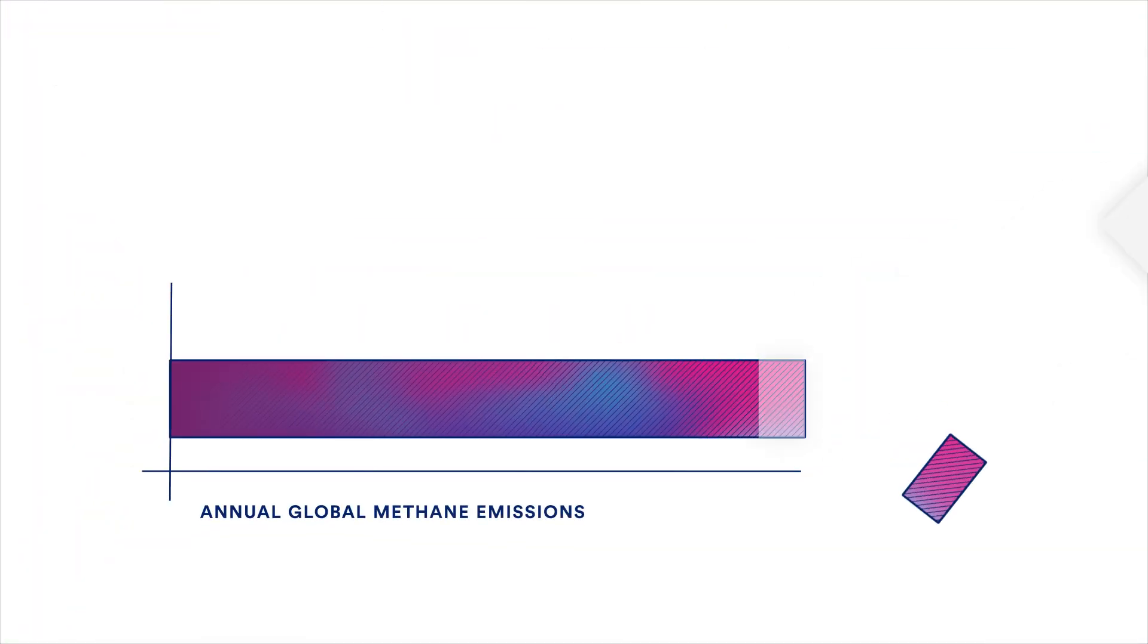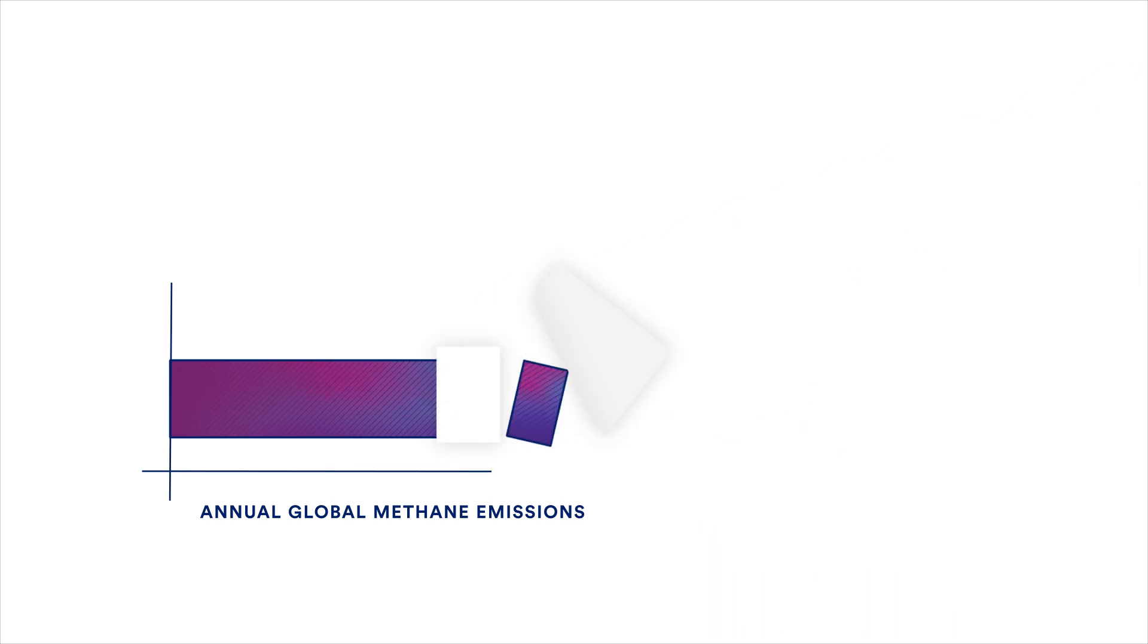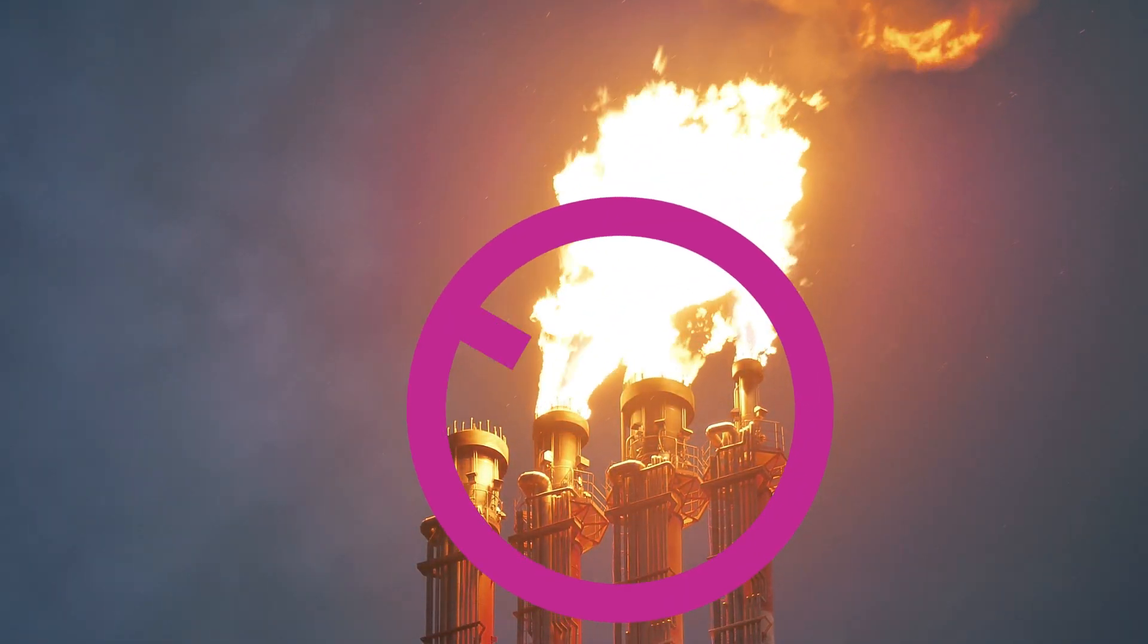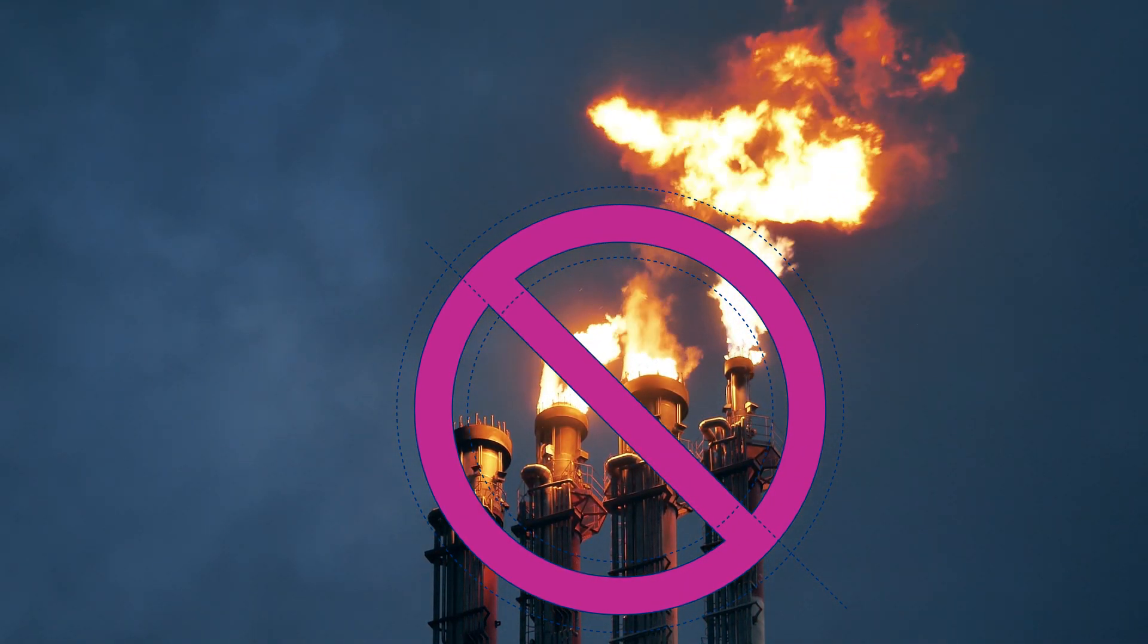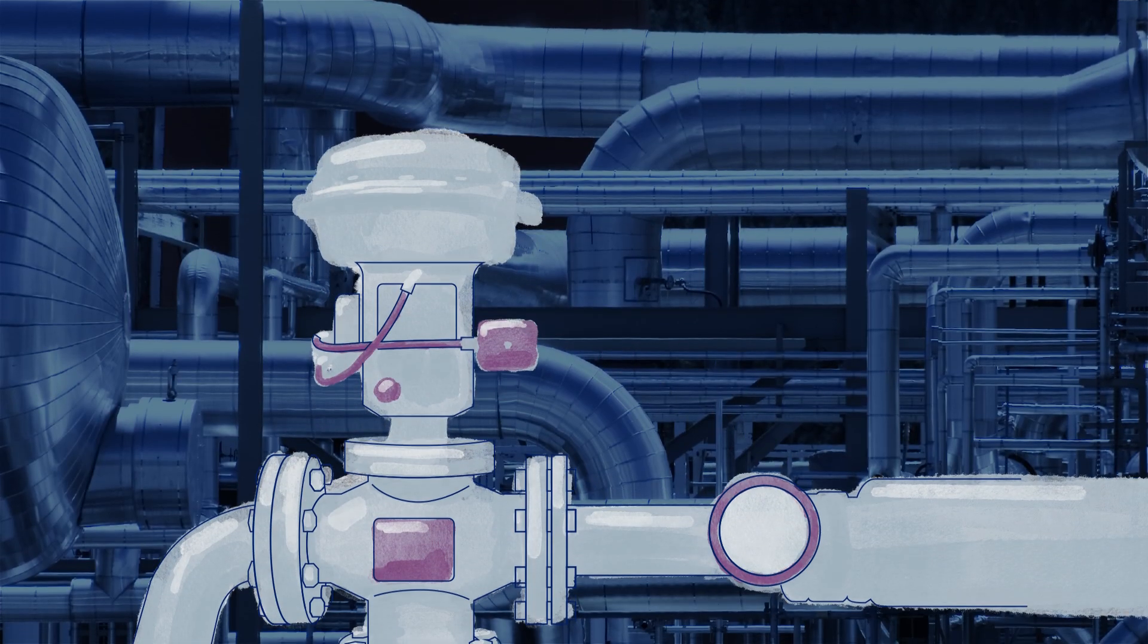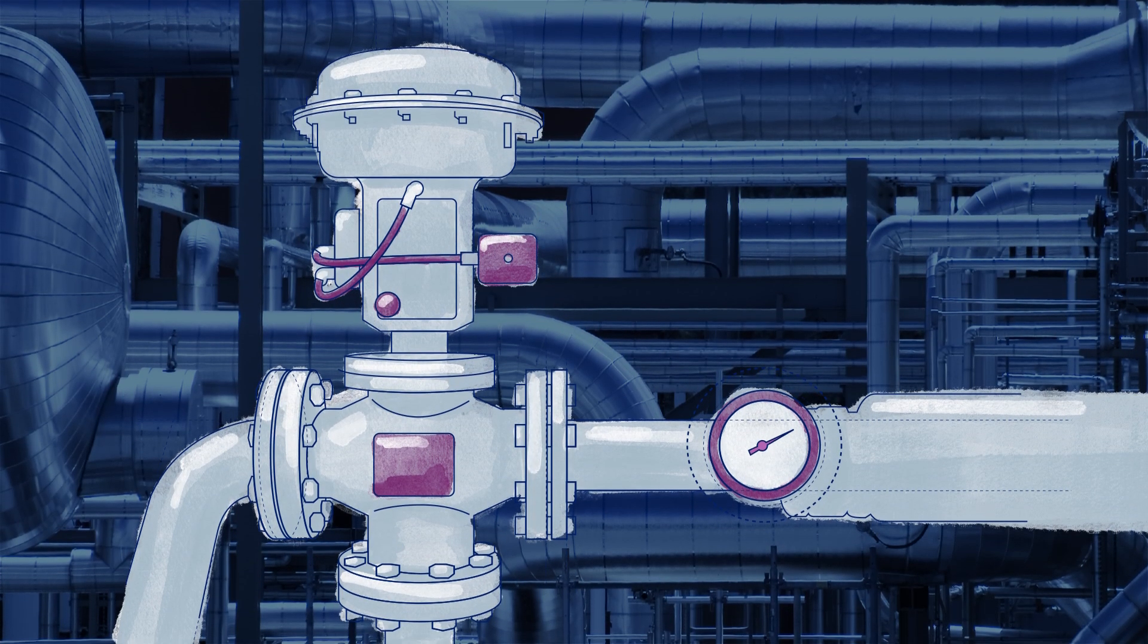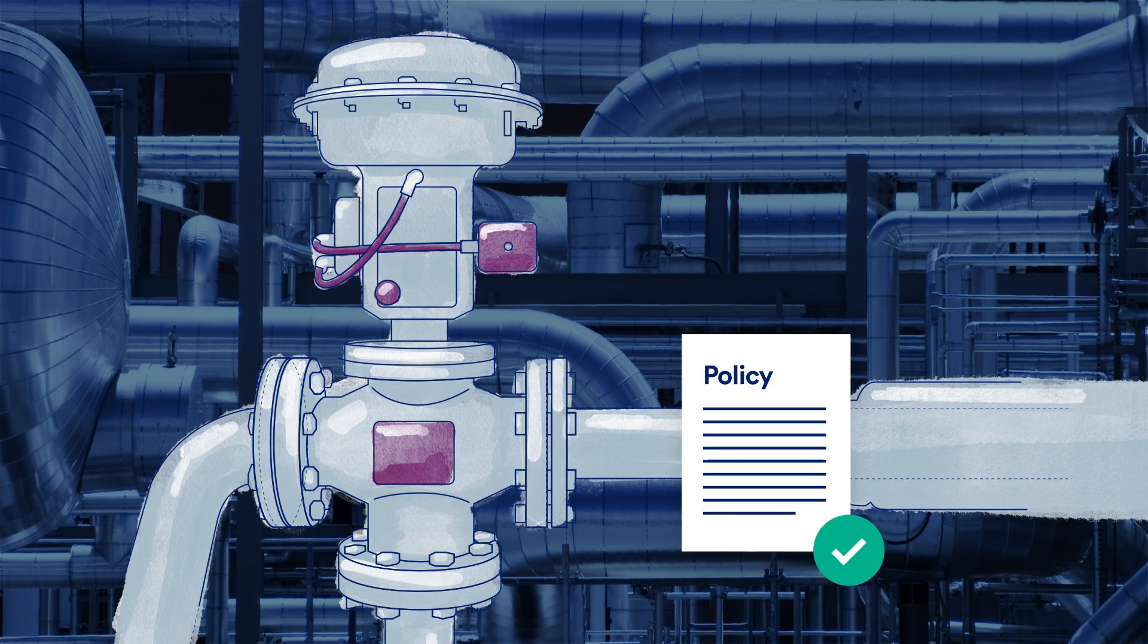The right public policies can help us achieve deep emissions reductions at a rate appropriate for the need and scale of the climate challenge. These policies are simple and include requiring companies to regularly monitor their facilities to find and repair leaks quickly, banning the practices of flaring and venting, where large amounts of gas are burned off or released into the atmosphere, and finally, requiring companies to use modern equipment that doesn't let gas escape into the atmosphere.